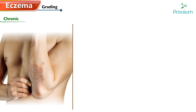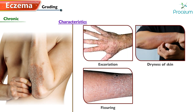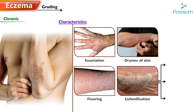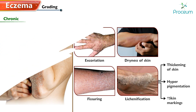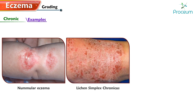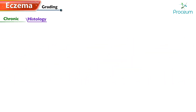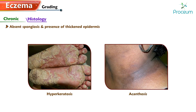Finally, chronic eczema. Characteristics encompass excoriation, dryness of skin, fissuring, and lichenification, which involves thickening of the skin, hyperpigmentation, and increased skin markings. Examples of chronic eczematous conditions include nummular eczema, lichen simplex chronicus, and atopic dermatitis. Histologically, chronic eczema is distinguished by the absence of spongiosis and the presence of a thickened epidermis characterized by hyperkeratosis and acanthosis.